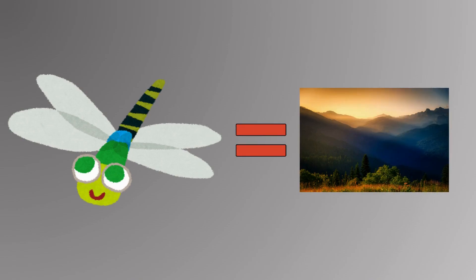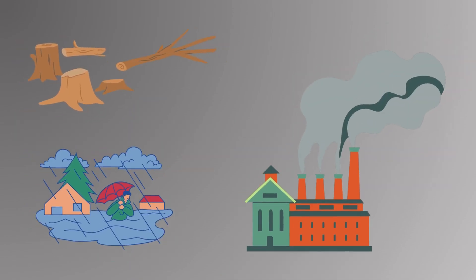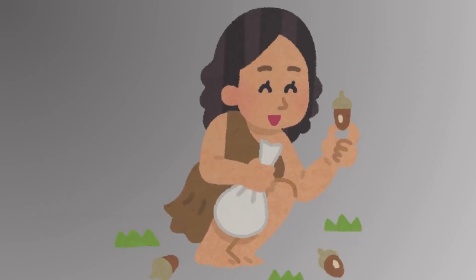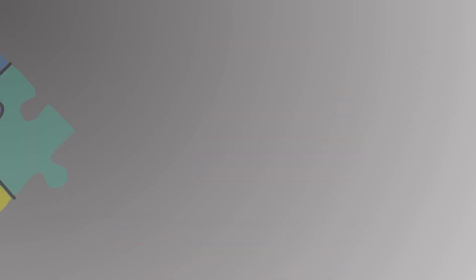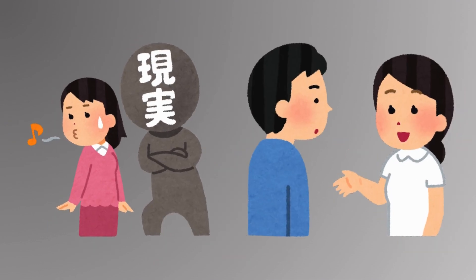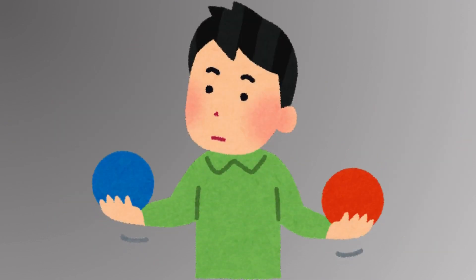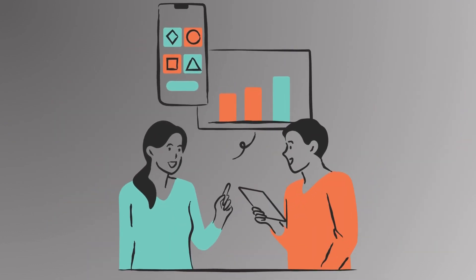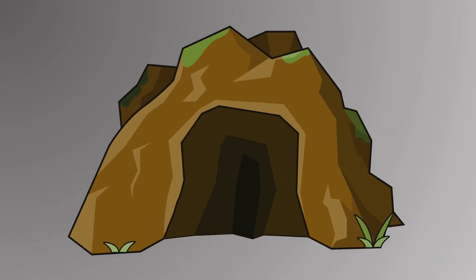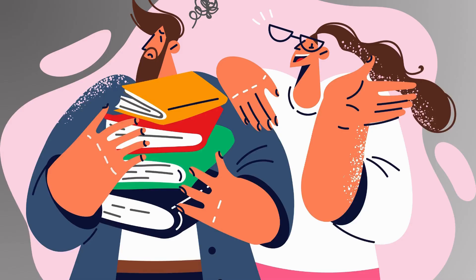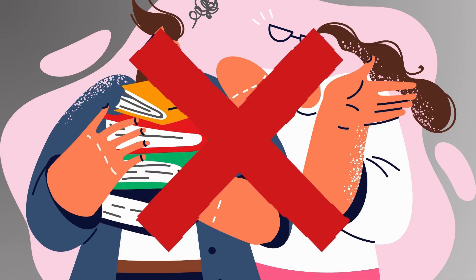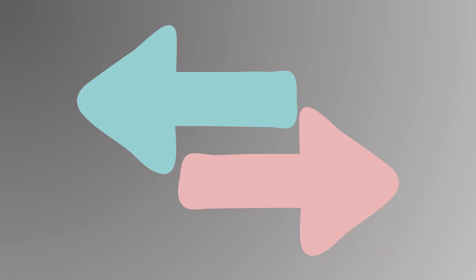They react to environmental changes, including those caused by humans, based on their survival instincts. While their behavior like swarming, avoiding, or approaching humans might seem like judgment, these are simple responses to stimuli like food, shelter, or threats. Bugs lack the cognitive ability for conscious judgment or moral reasoning.